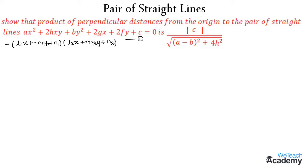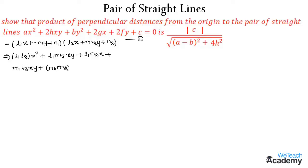Let us multiply both the terms. By multiplying l₁x with the group we get l₁l₂x² + l₁m₂·xy + l₁n₂·x. Multiplying m₁y with the group we get m₁l₂·xy + m₁m₂·y² + m₁n₂·y. Multiplying n₁ with the group we get l₂n₁·x + m₂n₁·y + n₁n₂. Now let us simplify this equation.